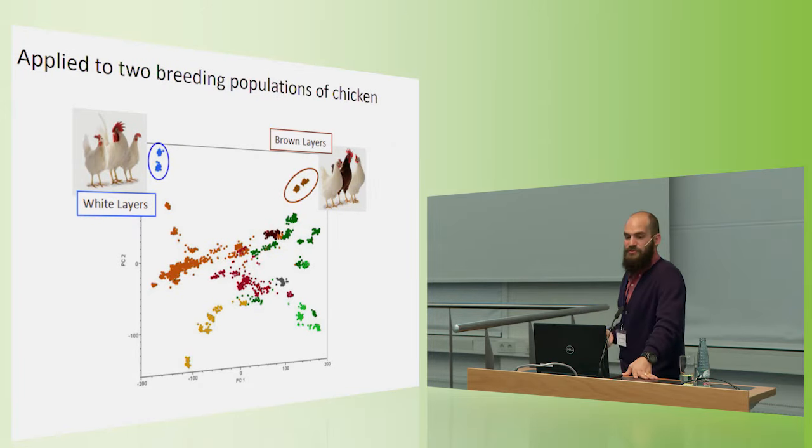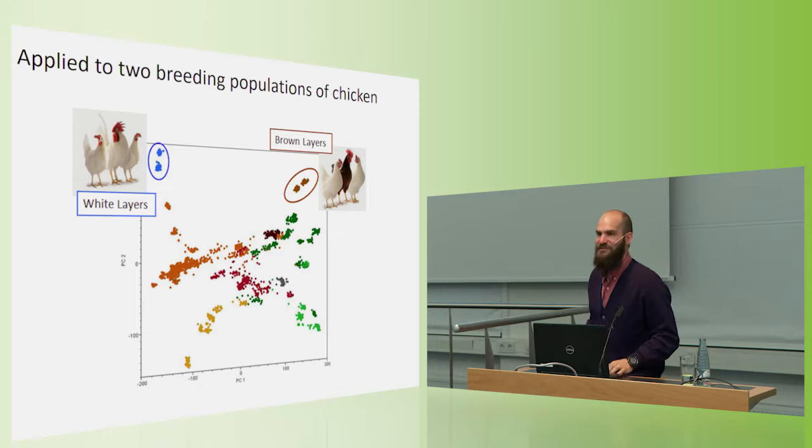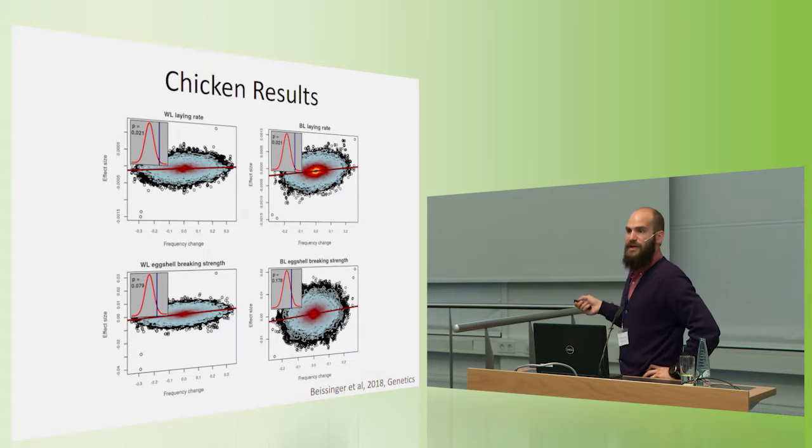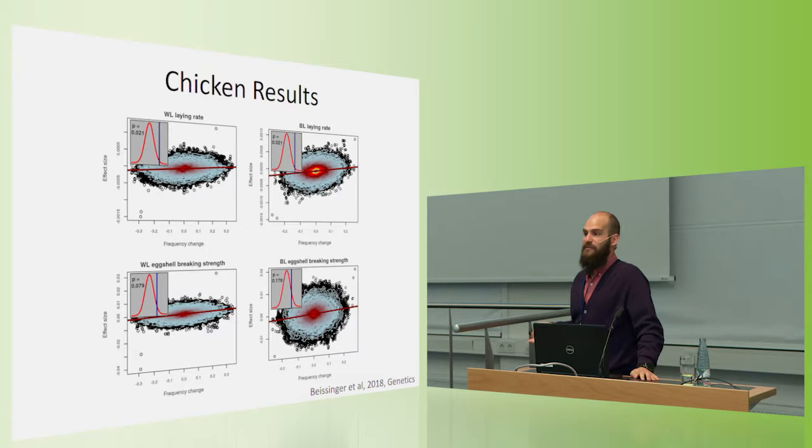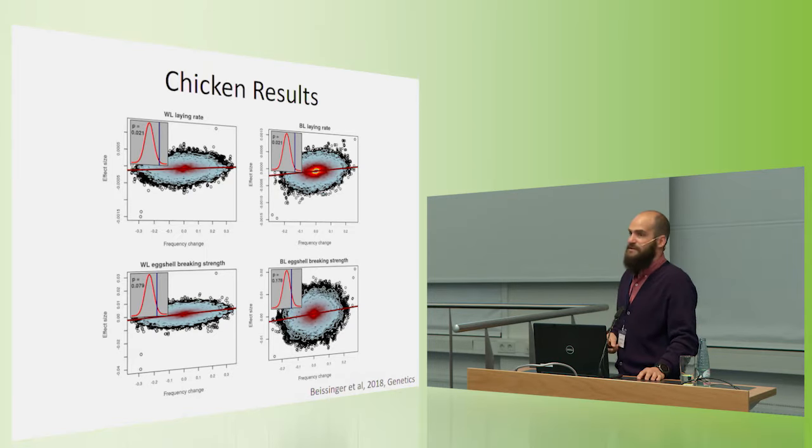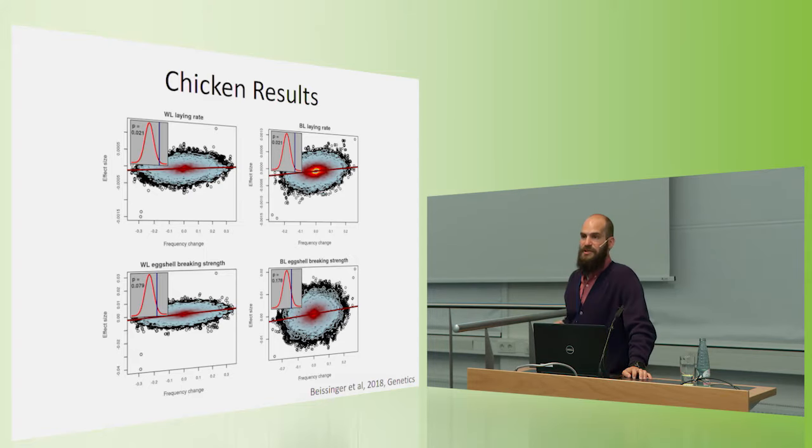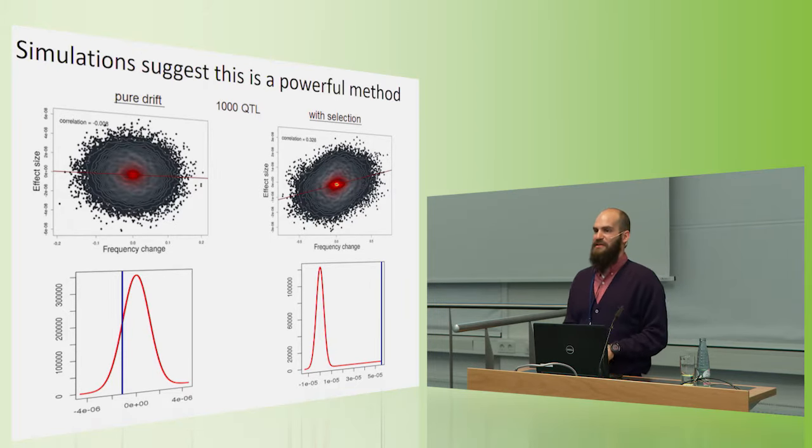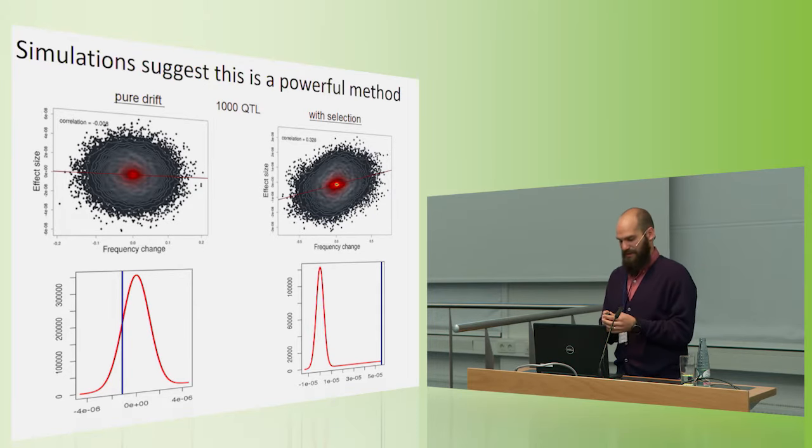We've also applied this to two breeding populations of chickens that were, the data was provided by Lohmann Tierzucht. I probably pronounced that wrong, so I apologize. And this is a population of white layers and brown layers. And we implemented the test on an assortment of traits, but the most interesting ones were laying rate and eggshell breaking strength. We saw that there was selection for increasing laying rate, which you would certainly expect in a population of breeding chickens. And in the white layers, we could identify evidence of selection, but not quite at the 0.05 level for eggshell breaking strength as well.